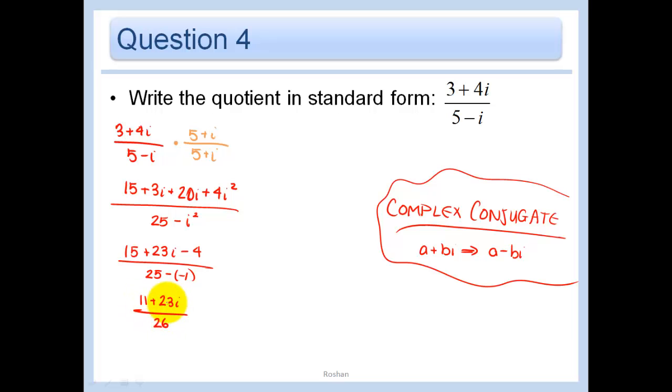Finally, I'm just going to divide each term by the 26. So I get 11 over 26 plus 23 over 26i. And that is my final answer in standard form. If I ask you for standard form, I need the real number part and the imaginary part separated. So this would not be a final answer. This is.